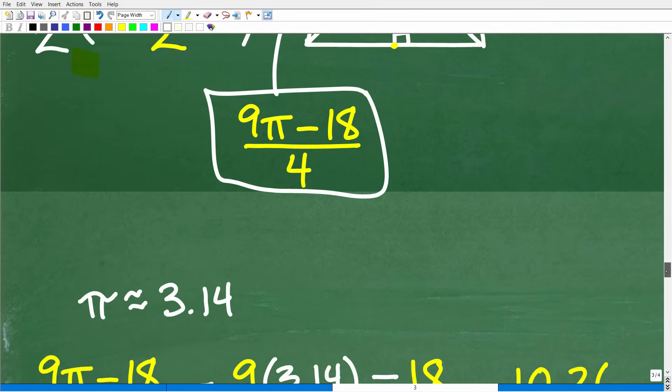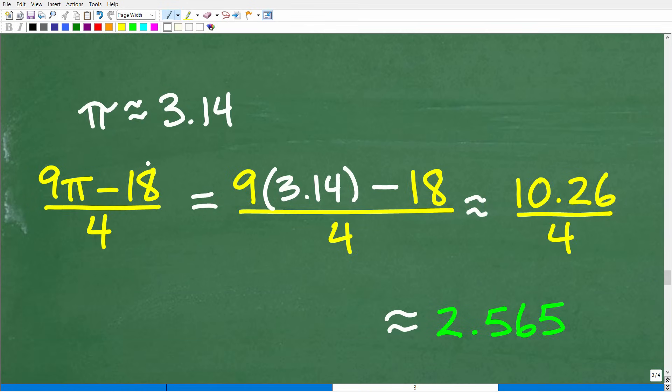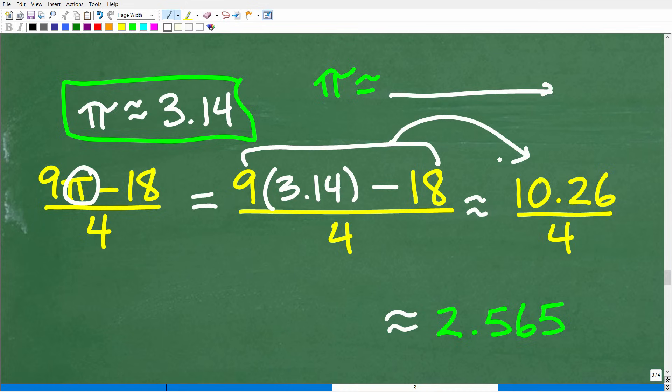If you wanted a decimal approximation, we could take a rough approximation for pi. You never want to use anything less than 3.14 for pi. Pi is an irrational number, and if you want a more accurate answer, you can use more digits of pi, which will make your final answer more accurate. For the purposes of this video, we'll use a simple 3.14 approximation for pi. That's the most basic decimal value you would want to use. Let's replace this pi with 3.14. We have 9 times 3.14 minus 18. When we do this calculation, we get 10.26 approximately, and we'll divide that by 4, giving us approximately 2.565 units squared.